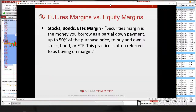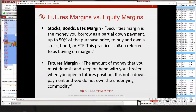Securities margin is the money you borrow as a partial down payment — up to 50% of the purchase price — to buy and own a stock, bond, or ETF. This is often referred to as buying on margin. When you borrow money, you pay interest. Futures margin, by contrast, is the amount of money you must deposit and keep with your broker in your brokerage account when you open a futures position.